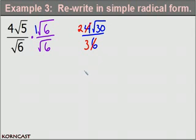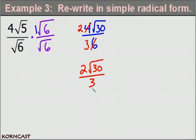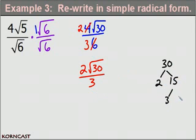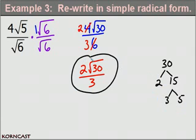So 2 times the square root of 30 is 2 root 30 divided by 3. Before I decide this is my final answer, I'm going to see if I can simplify the square root of 30. So I'll factor 30, which is 2 times 15 and 3 times 5. I notice that I don't have any pairs in my factors, so the square root of 30 is as simplified as it can be. So this is my final answer for the simplification of this expression.